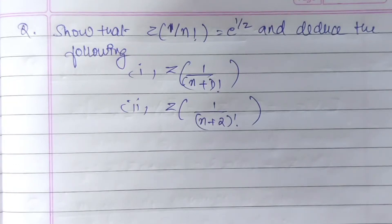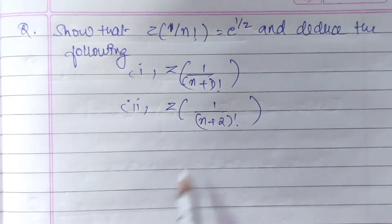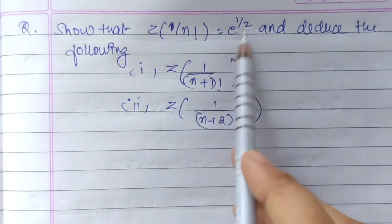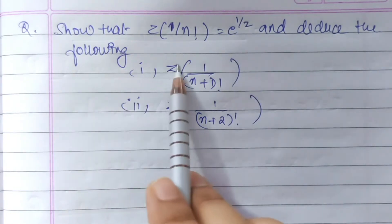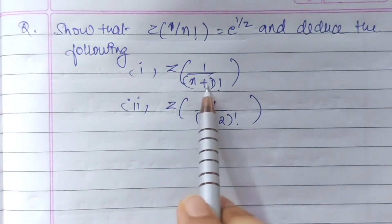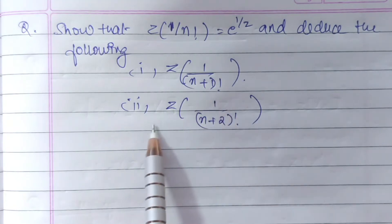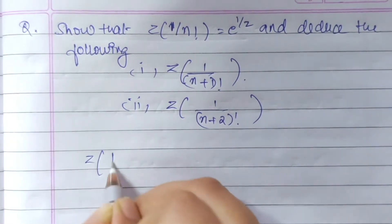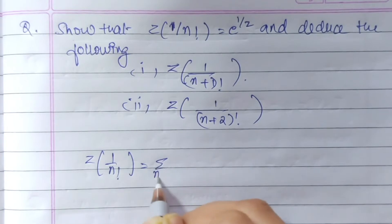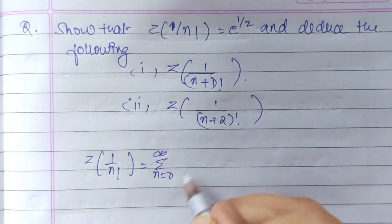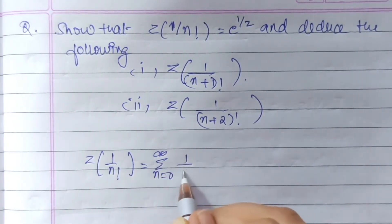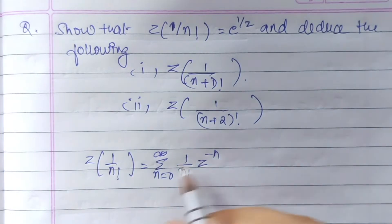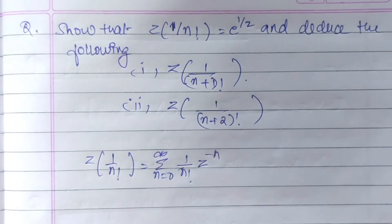On the basis of properties of Z-transforms that we've just studied, show that Z of 1 divided by n factorial is equal to e to the power 1 by z, and deduce the following: Z of 1 divided by (n+1) factorial and Z of 1 divided by (n+2) factorial. We know that Z of 1 divided by n factorial equals summation from n=0 to infinity of 1 by n factorial times z to the power minus n.